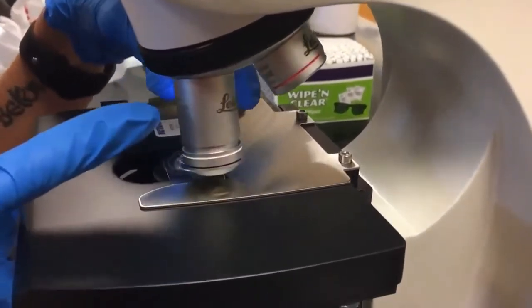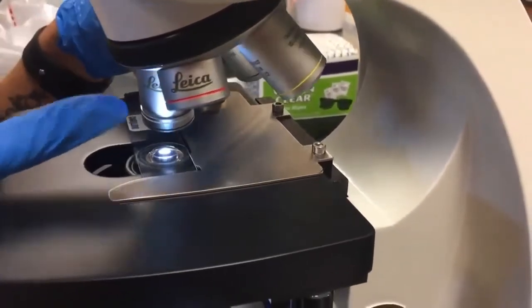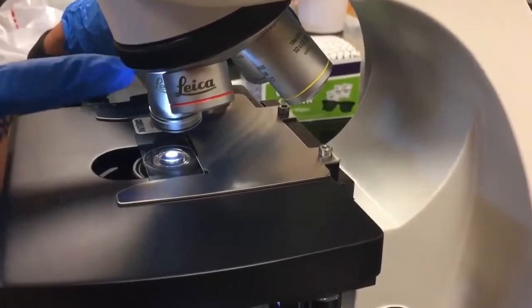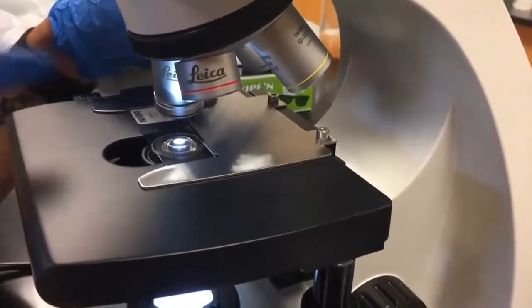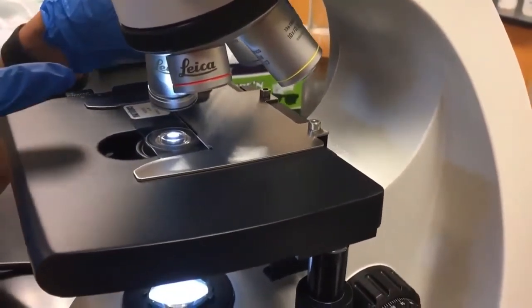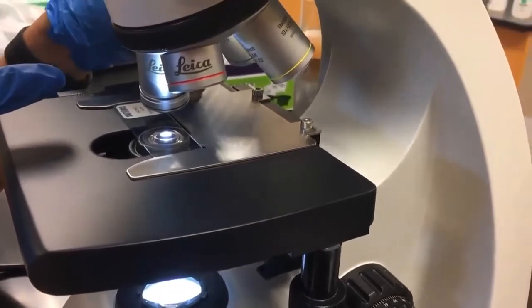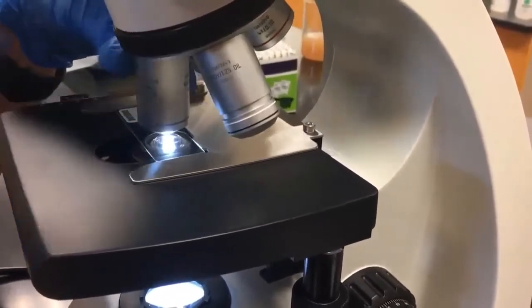You want to rotate past that one until you're in between your scanning and your oil lens. This is to prevent any sort of lens drift and you want to prevent getting oil on this high power lens.